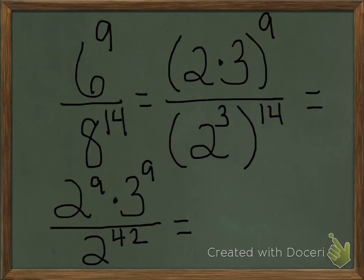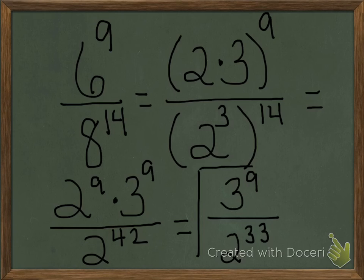We can simplify the problem more by saying 2 to the 9th power divided by 2 to the 42nd power, which is 2 to the 33rd power in the denominator and 3 to the 9th in the numerator. So, 6 raised to the 9th power divided by 8 raised to the 14th power would be simplified as 3 to the 9th power divided by 2 to the 33rd power.